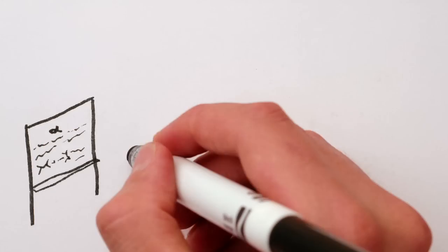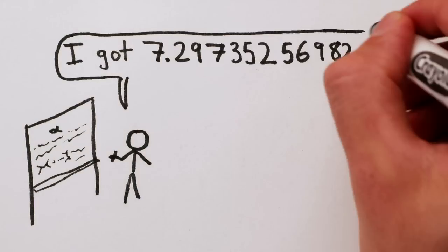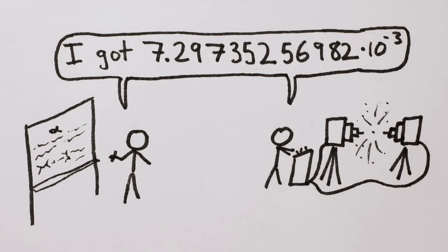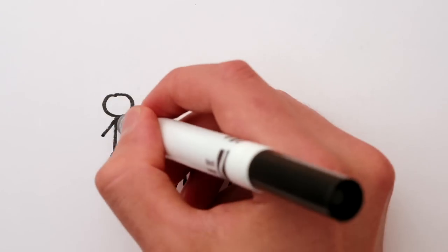For example, they've calculated quantities like the strength of the electromagnetic force, with incredible precision. And the calculation agrees with experiment. This is one of the most accurate and precise results in all of science. And that's the power of taming infinity.